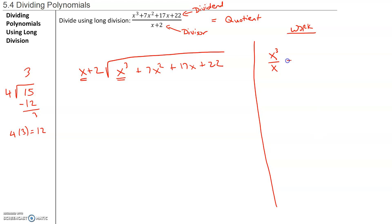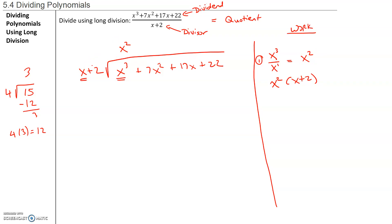x cubed divided by x gives you x squared — we have three x's, we take away one, so that gives you x squared. Just like when you have the 3 up here, we multiply 3 times 4 to get 12. So each step has two parts. Part one is where we find the quotient. Then we take that x squared, just like we took that 3 and multiplied it by 4, we take that x squared and multiply it by x plus 2. Part two: we multiply that quotient by the divisor, which is x plus 2.